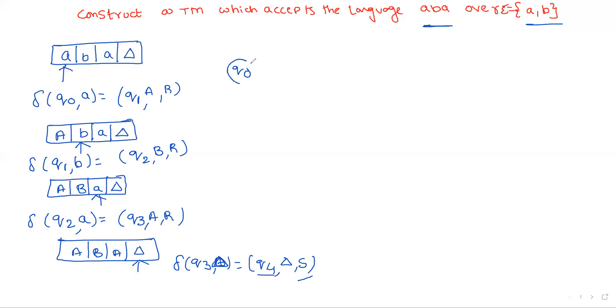This is a simple example to construct aba. The diagram is also very simple. Q0: on receiving input small a, replace with capital A and move right. Q1: if receiving b, replace with capital B and right direction. Q2: receiving small a, replace with capital A and right direction to q3. Q3: receiving blank symbol, replace with blank and right direction, move to state q4. Remember the notation is your choice: you can use this one or separate inputs and outputs with a slash.